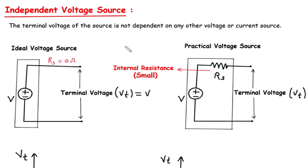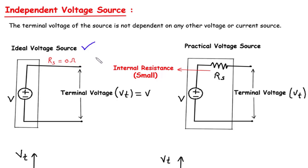Welcome to our video on independent voltage sources. Today, we will explore the ideal voltage source and the practical voltage source, highlighting their important characteristics. An ideal voltage source is a theoretical concept commonly used in circuit analysis to simplify calculations and understand basic principles. It is considered ideal because it provides a constant voltage (V) across its terminals, regardless of the current flowing through it. Additionally, an ideal voltage source has zero internal resistance (RS).